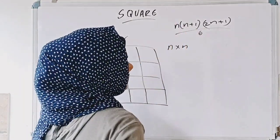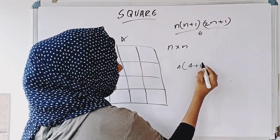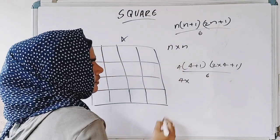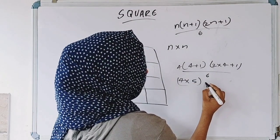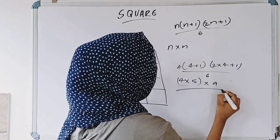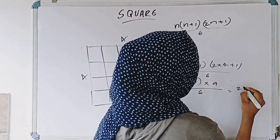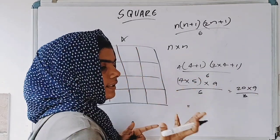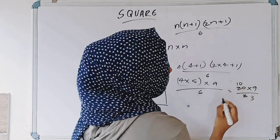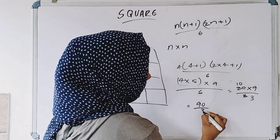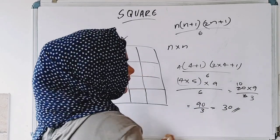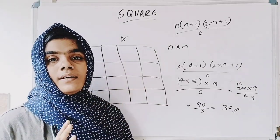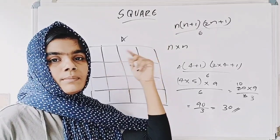So what do we do? We apply 2n plus 1 divided by 6: 4 into 4 plus 1 into 2 into 4 plus 1 divided by 6. 4 into 5 is 20, and 2 into 4 is 8, plus 1 is 9. So we get 20 into 9 divided by 6, which equals 30. Here you have 4 and here you have 4, and here 5.